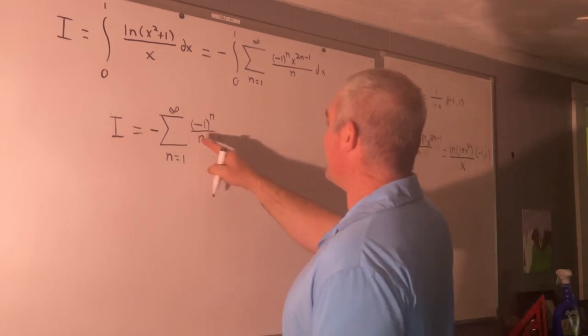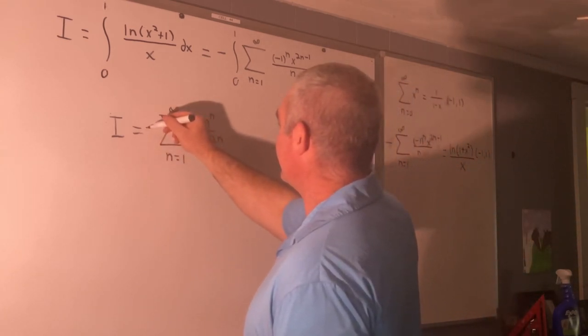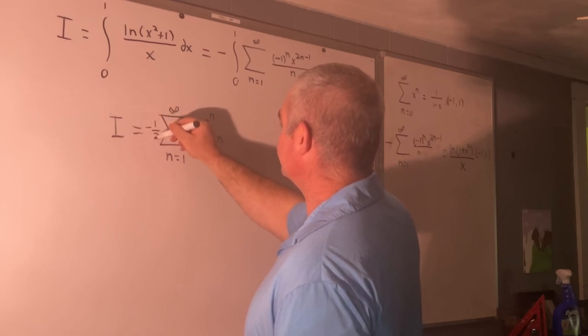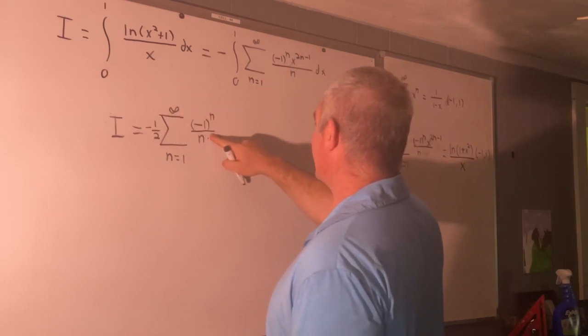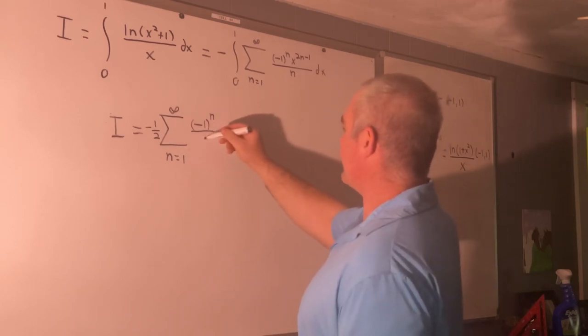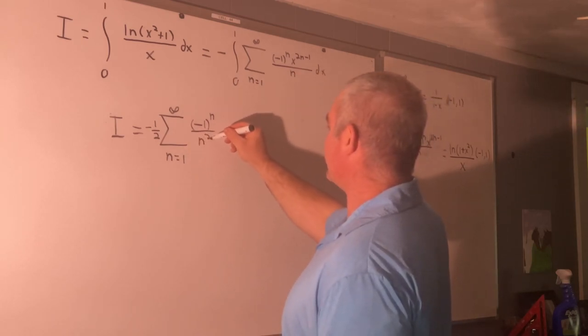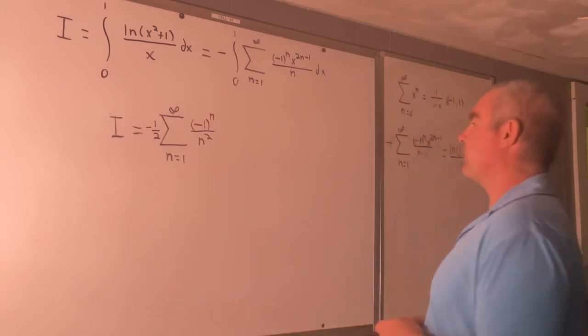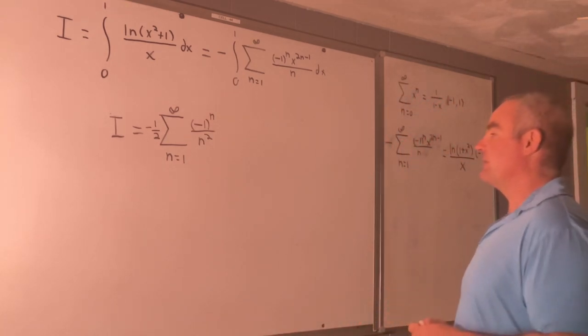Well we can bring this 2 out as a 1 half. And now we just have the sum as n goes from 1 to infinity of negative 1 to the n all over n squared times negative 1 half.